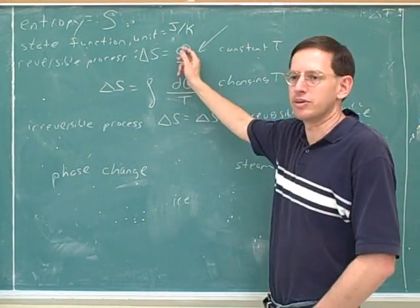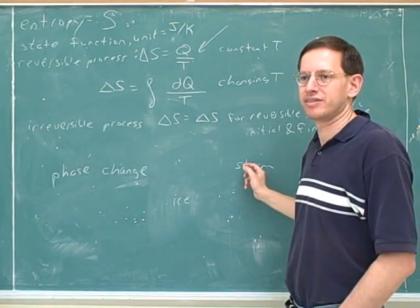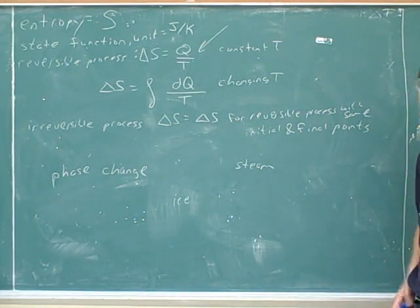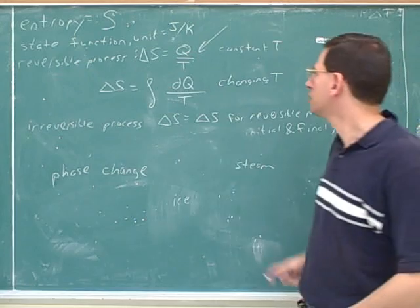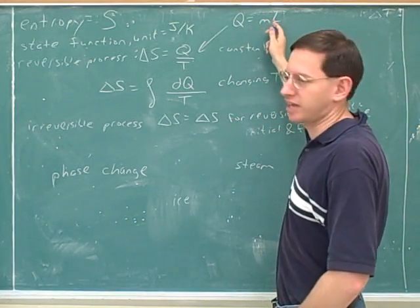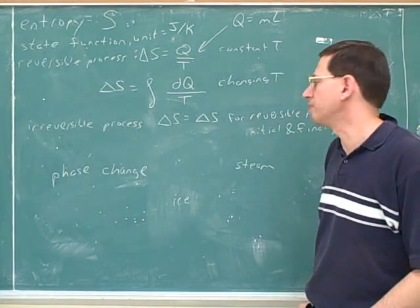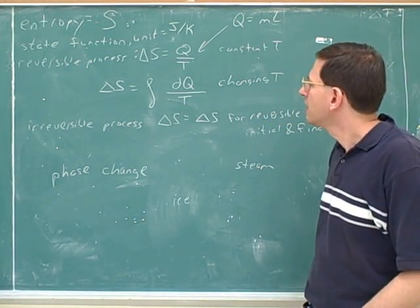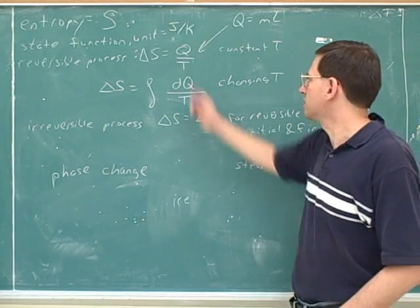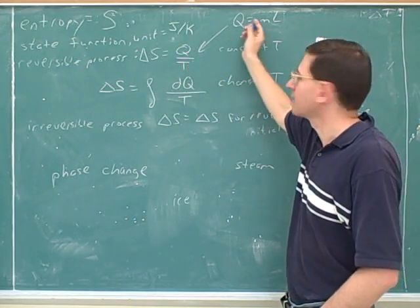If we can just figure out Q, we know what the temperature is going to be because that's the boiling point. For phase changes we use Q = mL — mass times the heat of transformation. So that's a common type of problem: for the entropy change of a phase change, you use ΔS = Q/T because the temperature is constant, and you figure out Q using Q = mL.